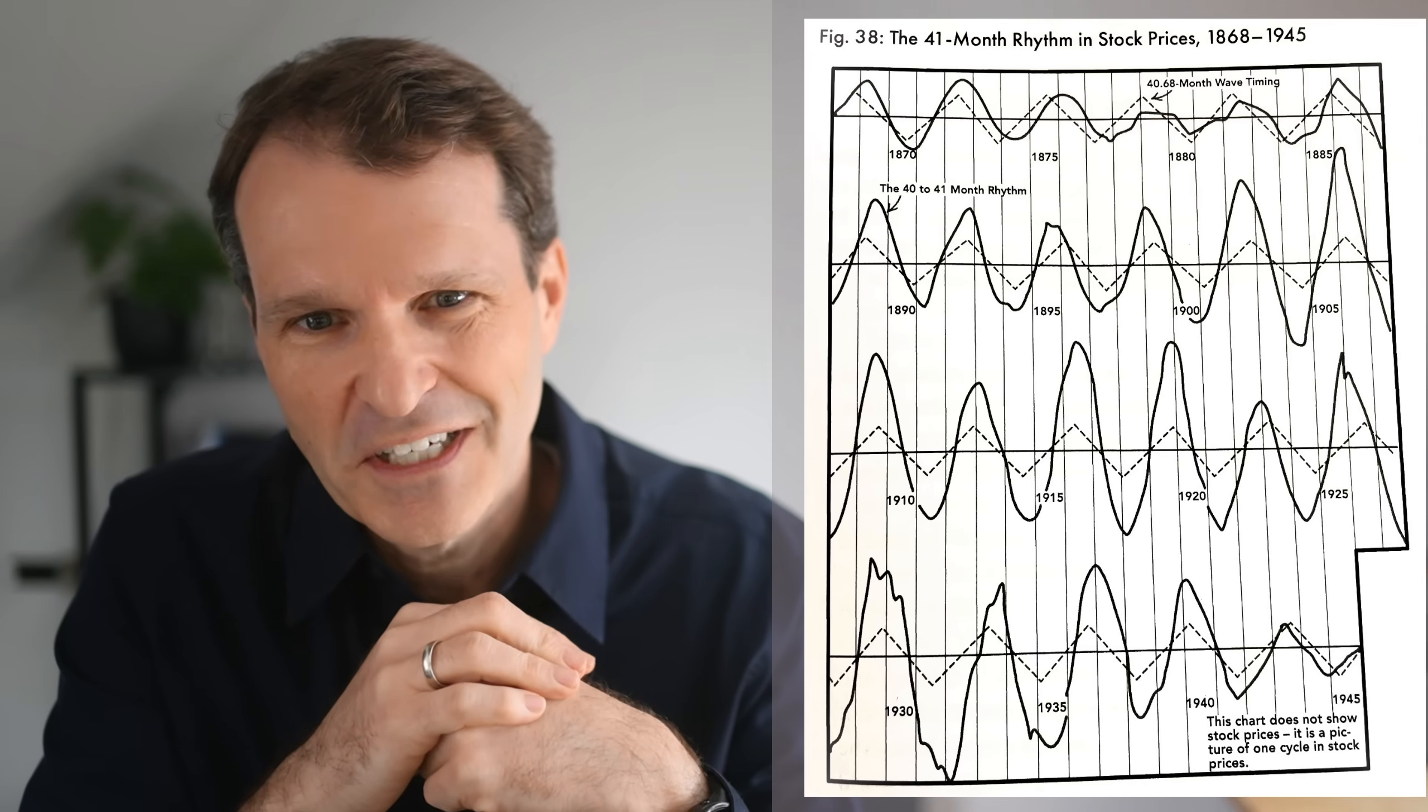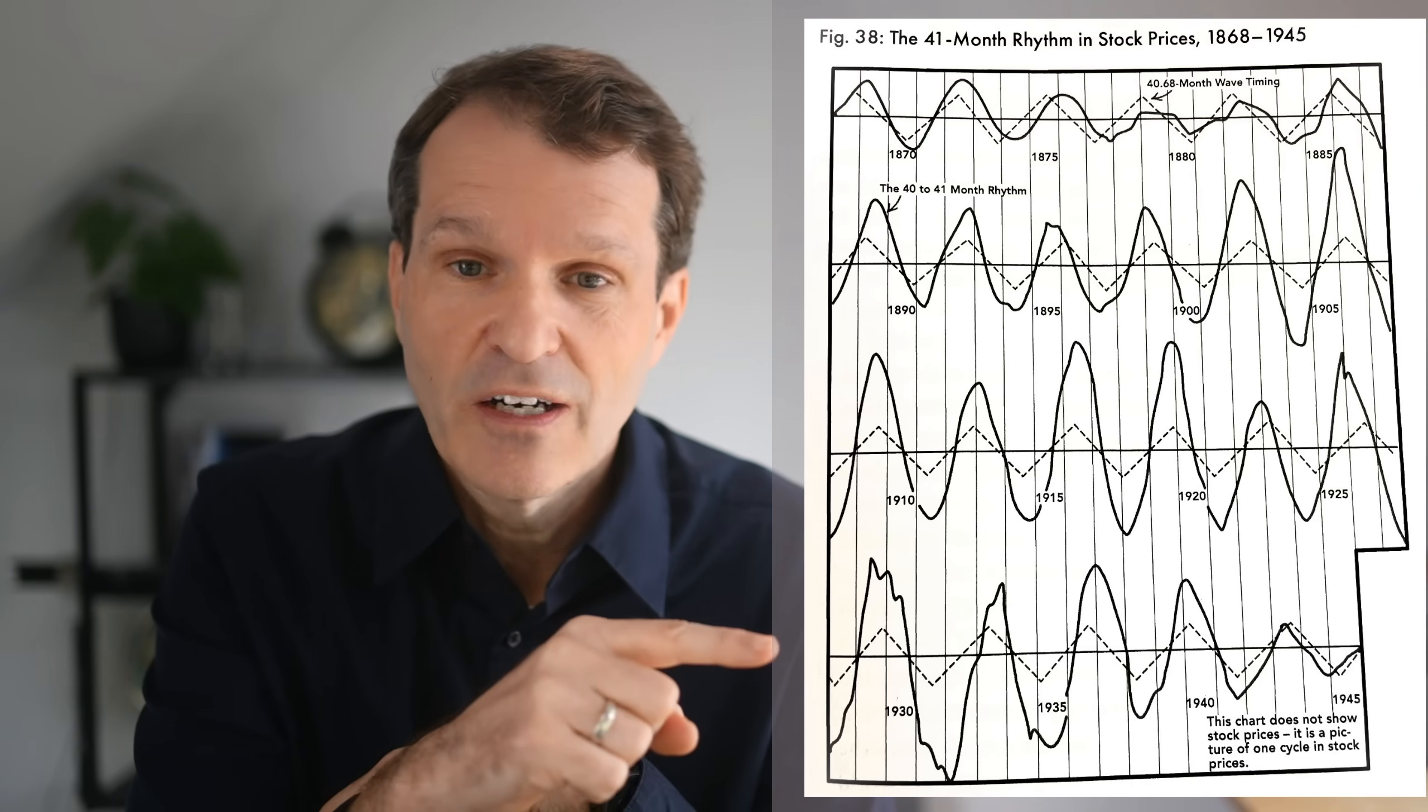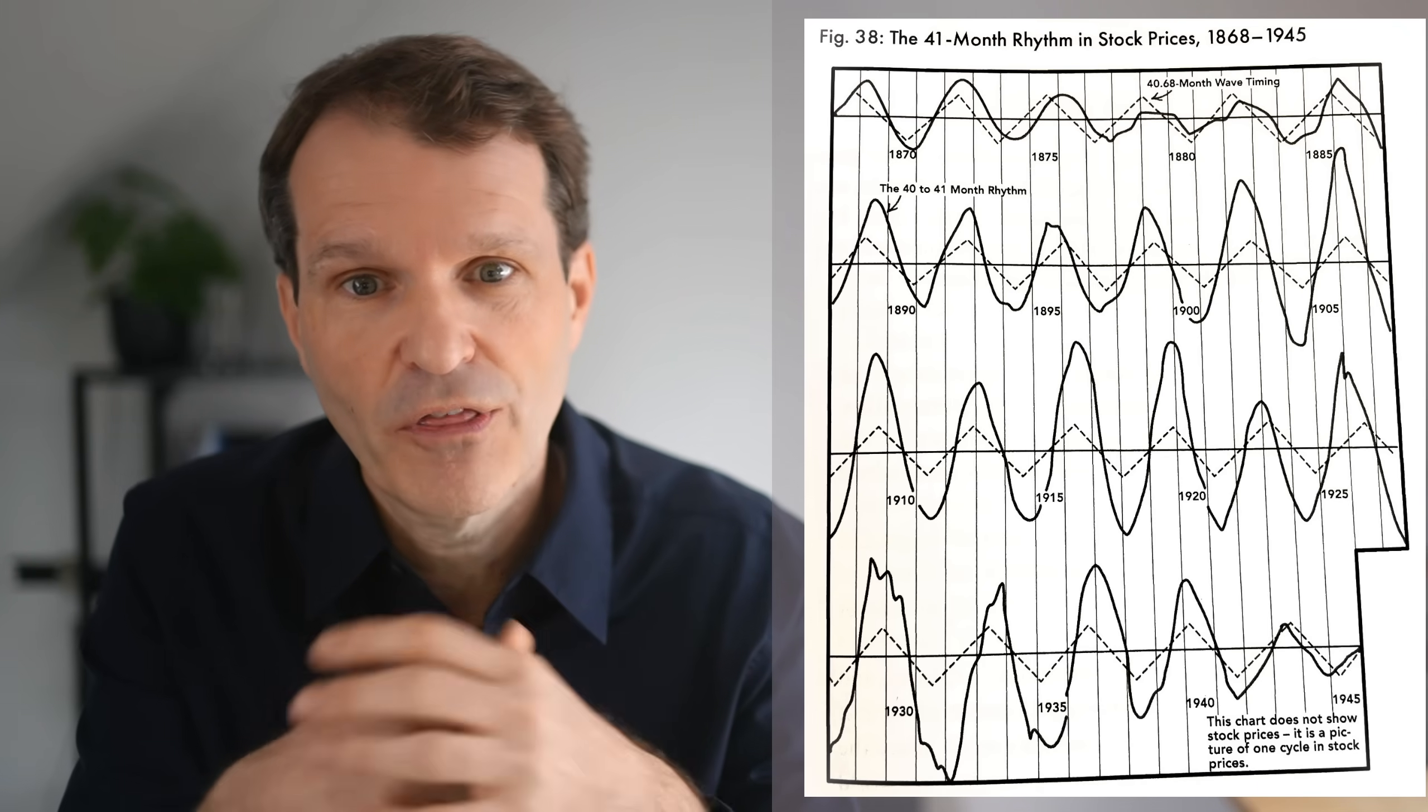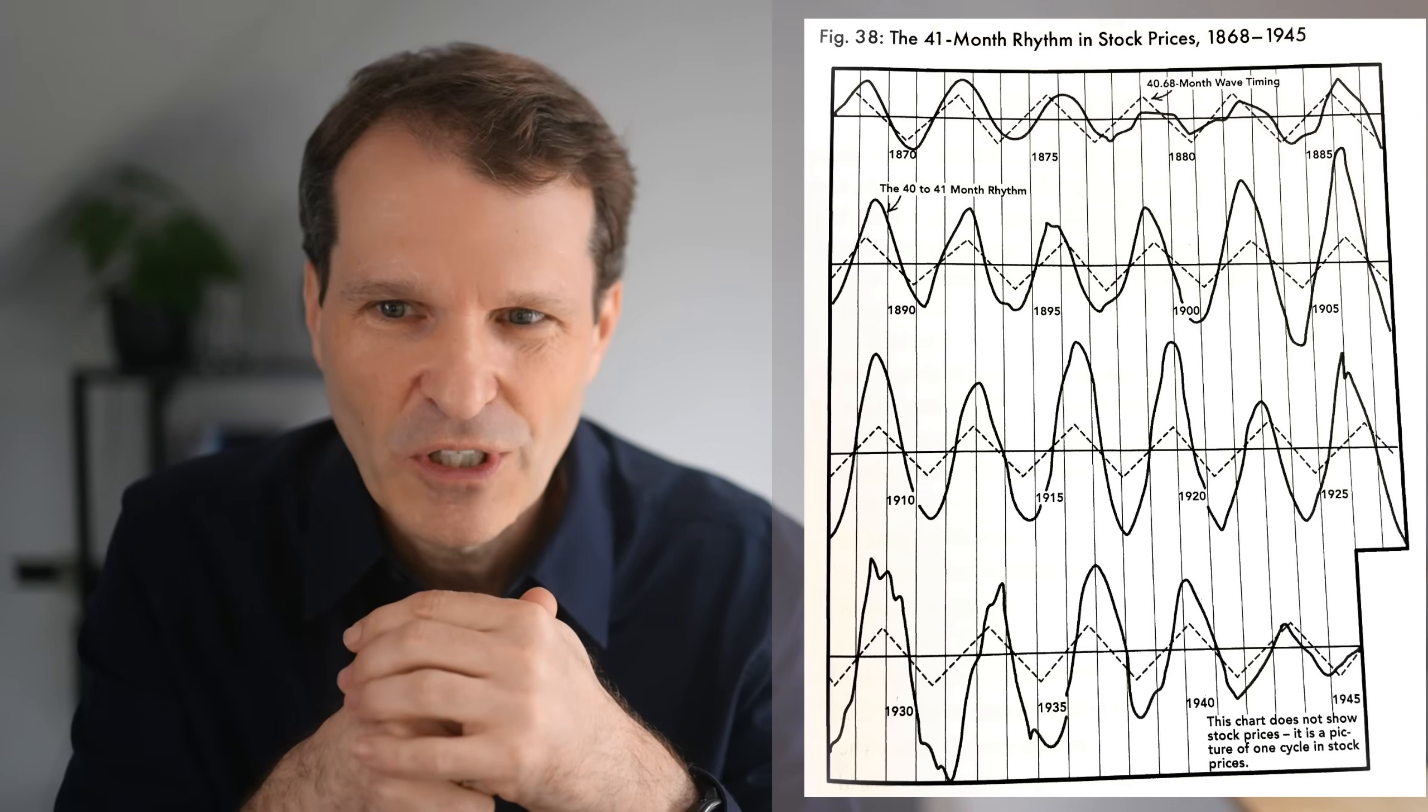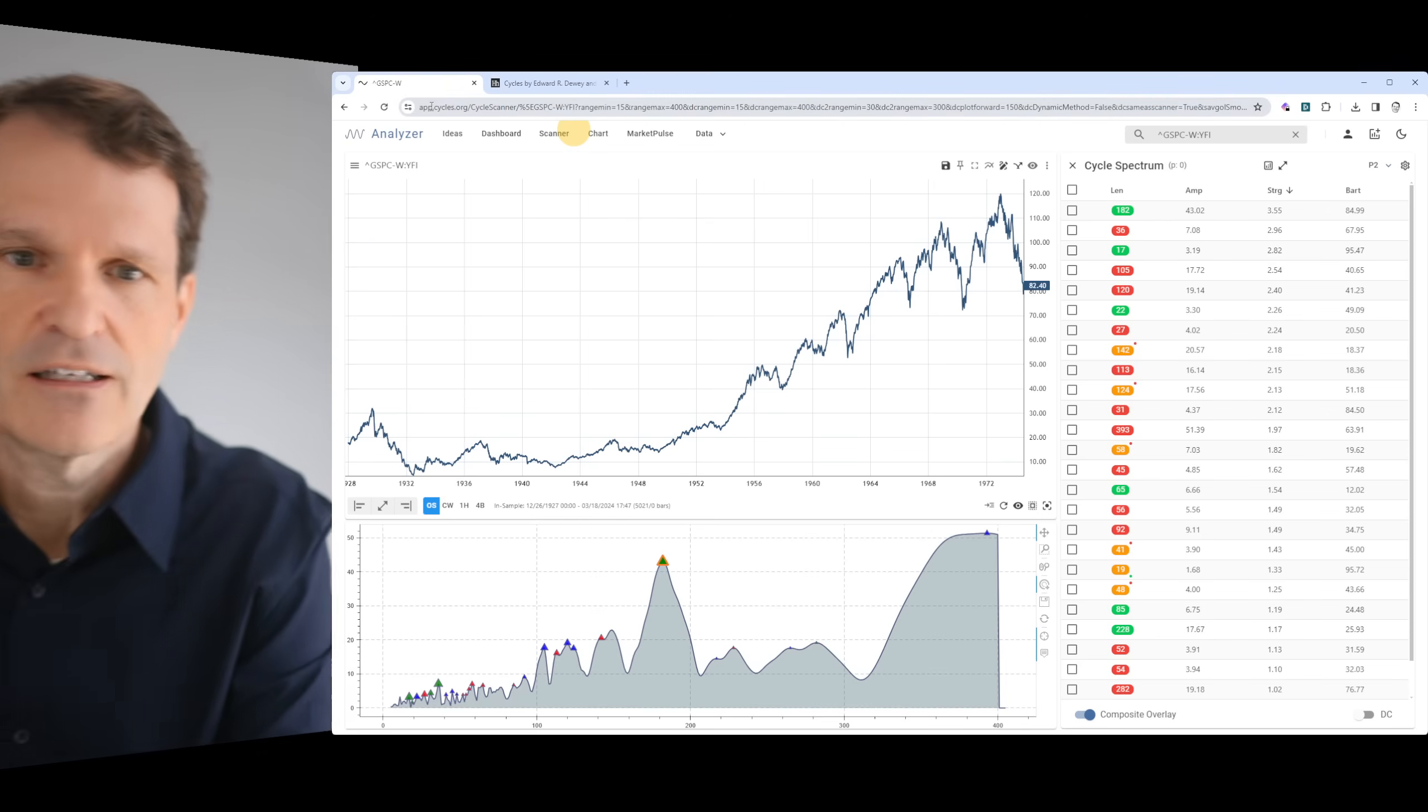I want to cross-check that 41-month cycle because it's important up to today. That's why I think it's worth mentioning that chapter which was written 70 years ago. That was the latest data Dewey had for his analysis. I will now show you and jump with you into today's world and let's review this 41-month cycle.